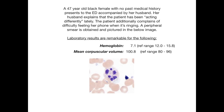A peripheral smear is obtained and pictured in the below image — you can see that picture at the bottom of the slide. Laboratory results are remarkable for the following: a hemoglobin level measured to be 7.1, and a mean corpuscular volume measured to be 100.8.